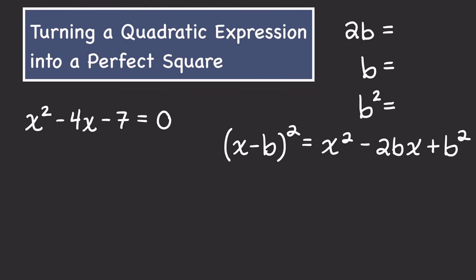Now we're going to see how we can use completing the square to solve a quadratic equation. Reminder: (x - b)² = x² - 2bx + b². In our equation that we could not factor, our middle term -2bx equals -4x, so 2b = 4. Dividing by 2, b = 2. Squaring the result gives b² = 4. That tells us if we isolate the x² - 4x and add 4 to it, we have a complete square we can solve by taking a square root.